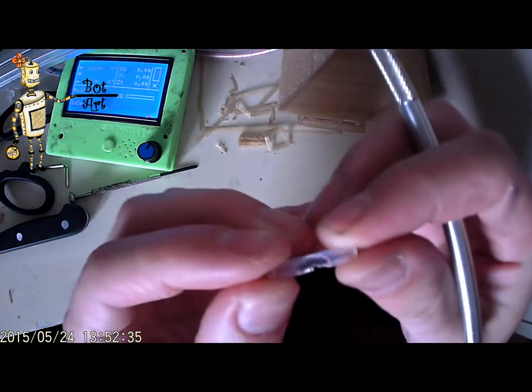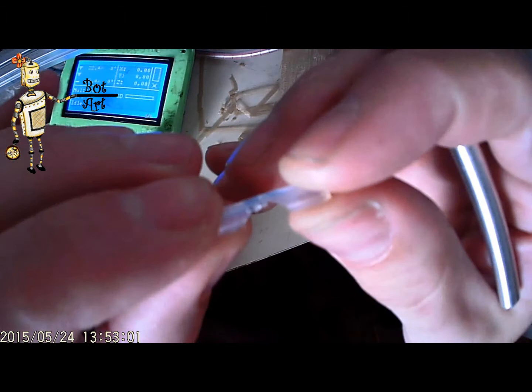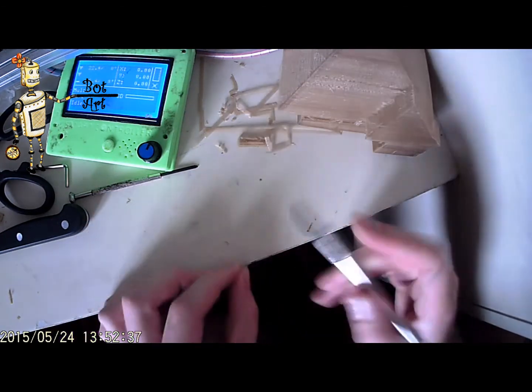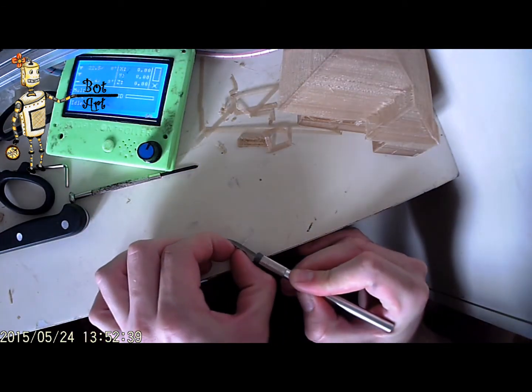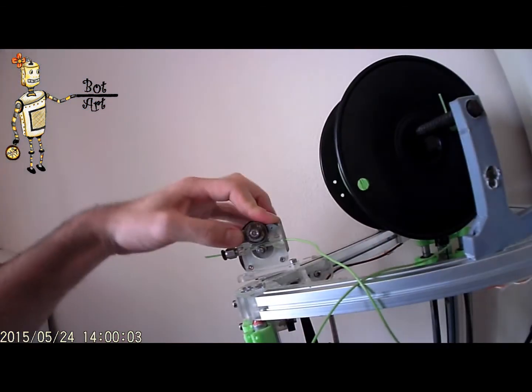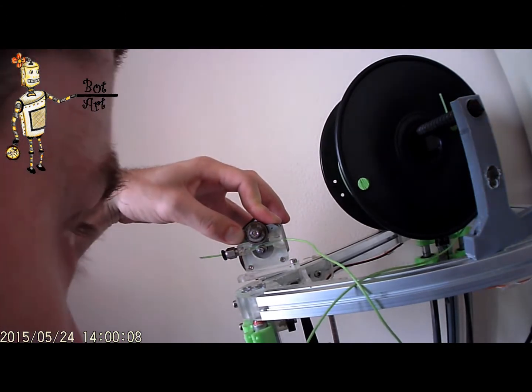This time, I looked for a simple solution. I took part of Bowden tube long enough to stay between filament enter and exit holes in the extruder, then made some cuts in the middle of the tube so the gear can touch the filament and not the tube.